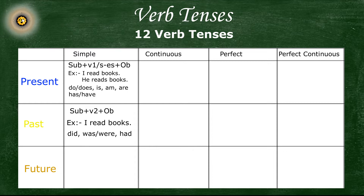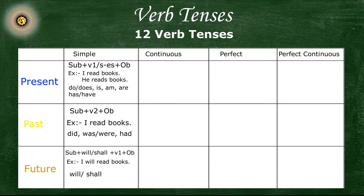Future simple tense — the sentence structure for simple future tense is: subject plus will or shall plus first form of verb plus object. The example sentence is: 'I will read books'. Now let's talk about the progressive or the continuous tenses.